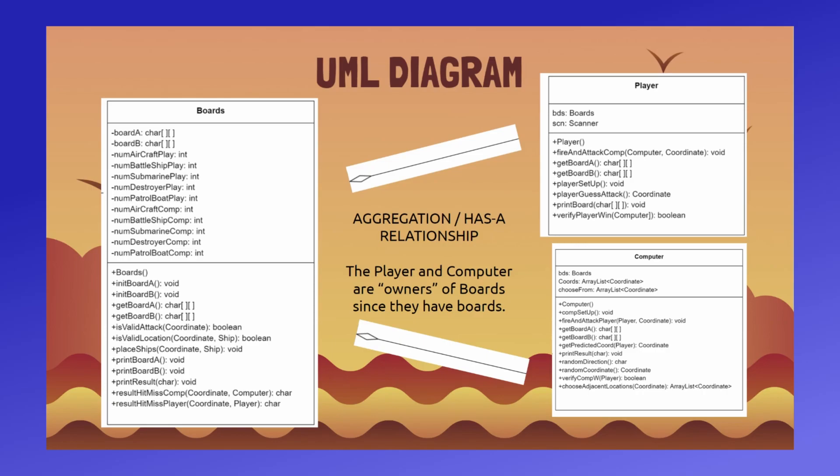Similarly, on the top left we have the Player class, which defines the functionalities of the human player which has boards. This class has the functionality of setting up the board, guessing a coordinate to attack on the computer's board, firing the attack and updating the board after enduring an attack, as well as printing the boards and verifying a player win.